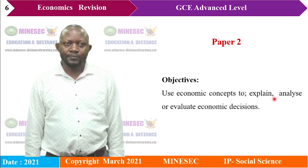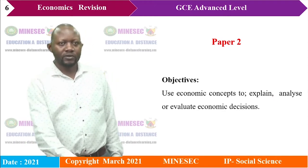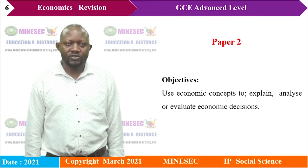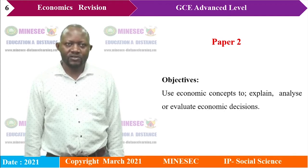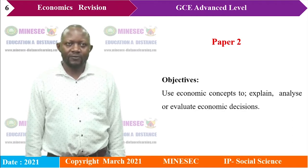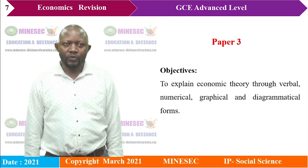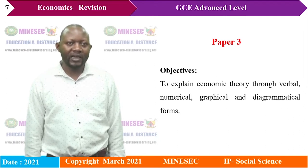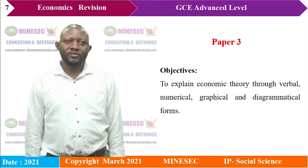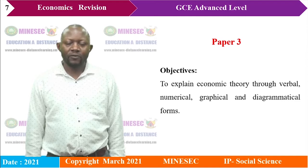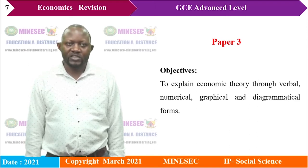Paper 2's objective is to use economic concepts to explain, analyze, or evaluate economic decisions. This paper carries 40% of the marks and is made up of eight questions — the first four under microeconomics and the other four under macroeconomics — and students are expected to answer five questions. Paper 3 has an objective to explain economic theory through verbal, numerical, as well as graphical forms. This paper takes 30% of the total marks and is made up of five data response questions, and students are expected to answer three.